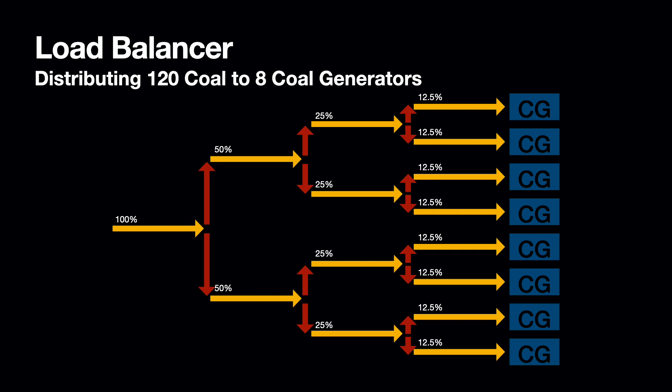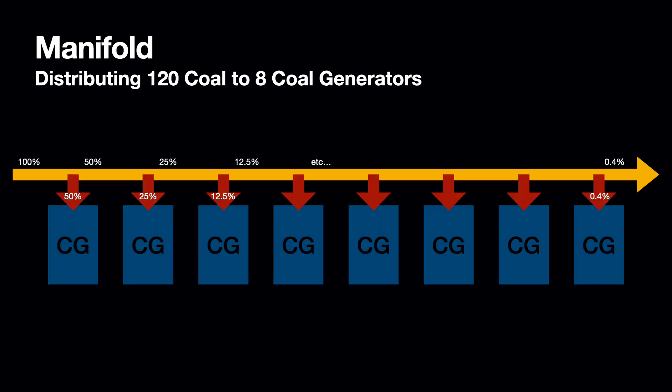So a balancer for six — which is two times three — machines is possible, but for seven it isn't. The manifold, on the other hand, will distribute 50 percent of items to the first machine and continue with 50 percent further down, meaning the last elements down the line get very few items to begin with as it's halved at each machine.